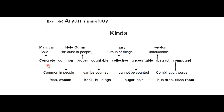There are few kinds of noun. First is concrete noun — concrete means solid, something you can touch, such as a man or car. Common noun means something common in people, things, or ideas. Proper noun means something particular — like a holy book, a name, or a specific thing. Countable noun — as the name suggests, it can be counted. For example, sugar cannot be counted, you can only measure it. But book and building can be counted.